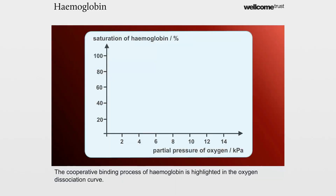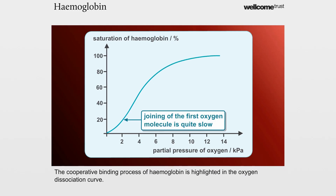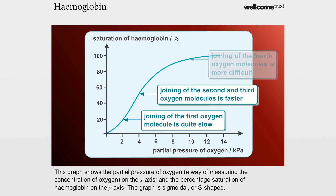The cooperative binding process of haemoglobin is highlighted in the oxygen dissociation curve. This graph shows the partial pressure of oxygen — a way of measuring the concentration of oxygen — on the x-axis, and the percentage saturation of haemoglobin on the y-axis. The graph is sigmoidal, or S-shaped.